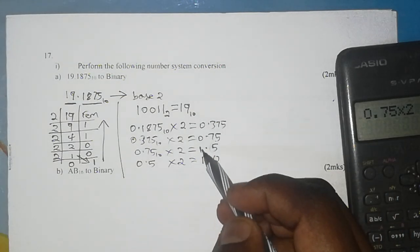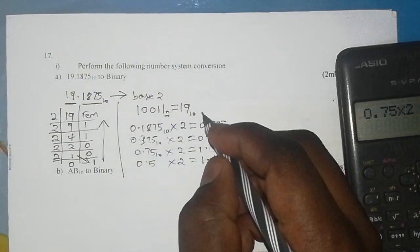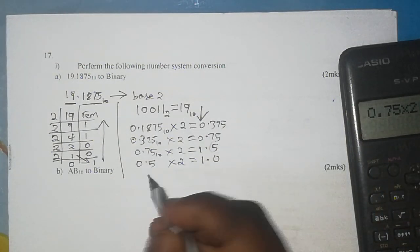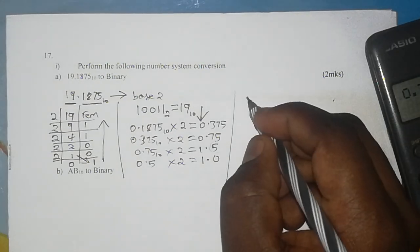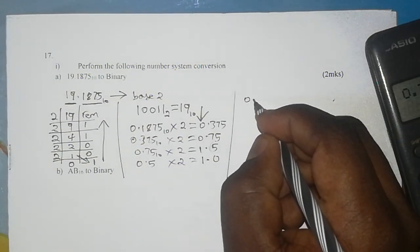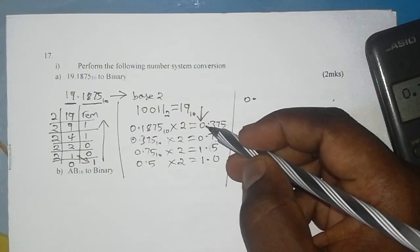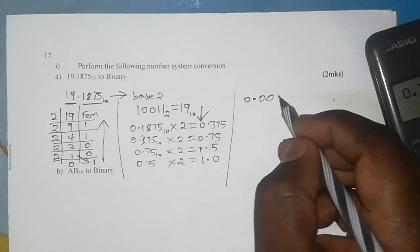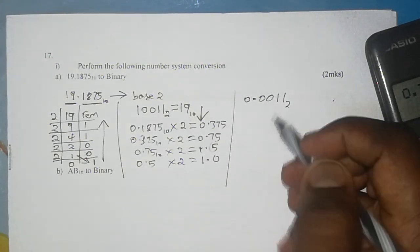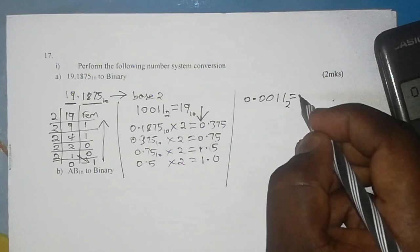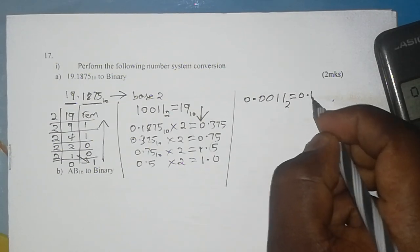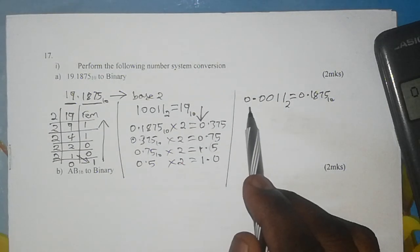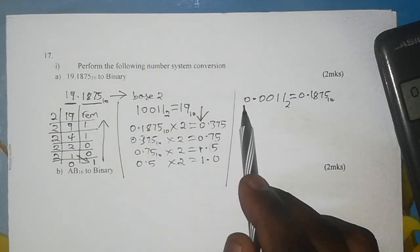And now, just like I said, we now consider our whole numbers from the products going downwards. Now the result for us from this is 0. So we begin with 0., and then 0 0 1 1, which is the equivalent of 0.1875 base 10. So this is the second part of our answer.